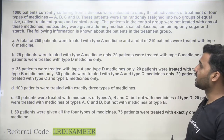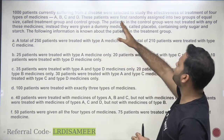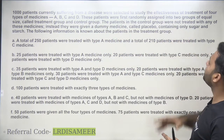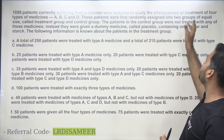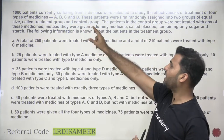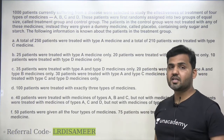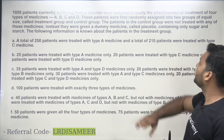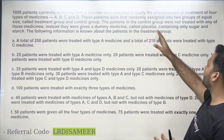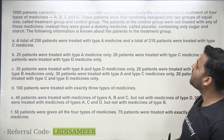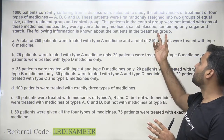Let's read the direction part. 1,000 patients currently suffering from a disease were selected to study the effectiveness of a treatment of four types of medicine: A, B, C, and D. These patients were first randomly assigned into two groups of equal size — treatment group and control group — meaning 500 in treatment and 500 in control. The patients in the control group were not treated with any medicine; instead they were given a dummy medicine called Placebo containing only sugar and starch. The following information is known about patients in the treatment group.